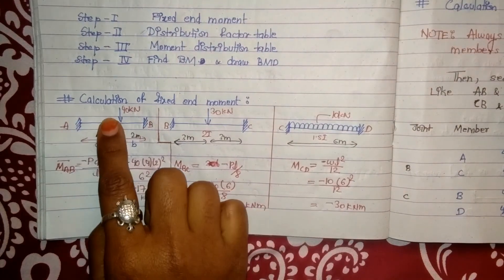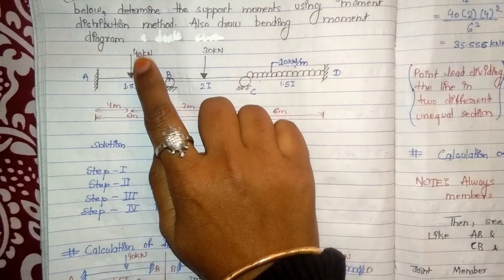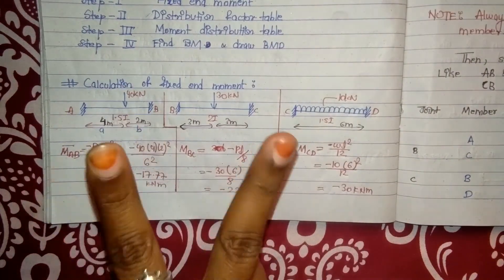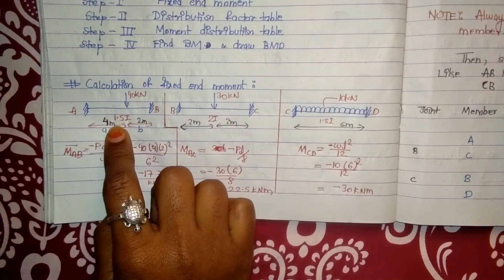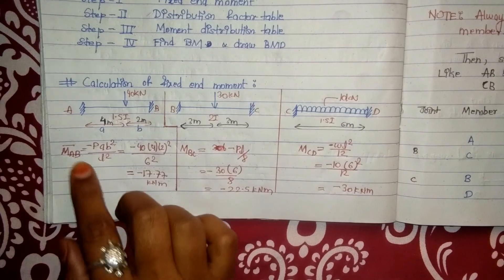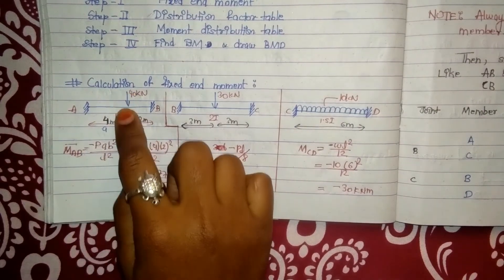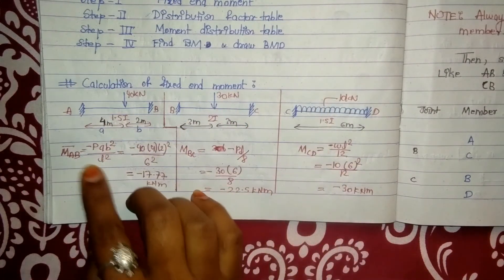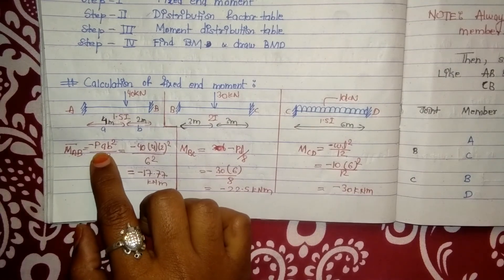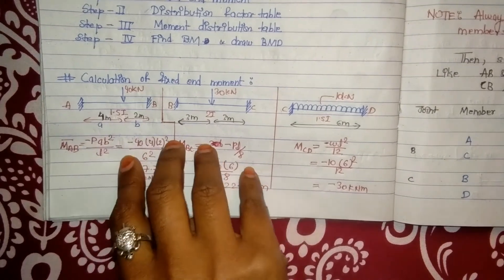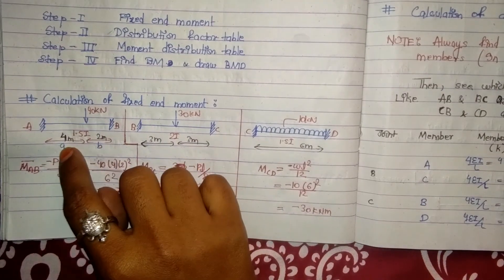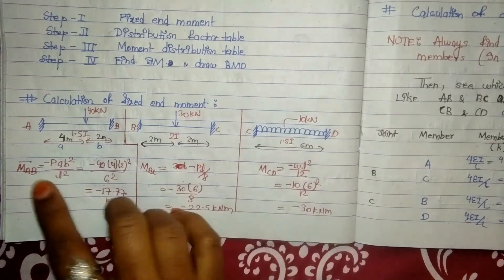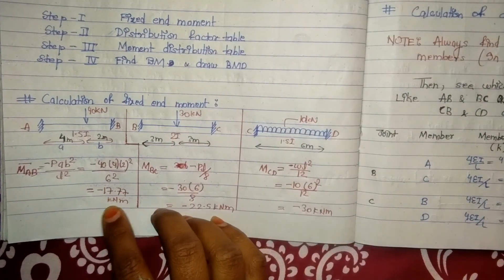For span A to B when fixed, a reaction of 40 kN divides the line AB into 2 sections — one section of 4 meters and the other section of 2 meters. For the calculation, when a point load divides a line into two different unequal divisions, the formula becomes P·a·b² / L². Putting values where a = 4, b = 2, and P = 40 kN, we get the value as 17.77 kN·m.